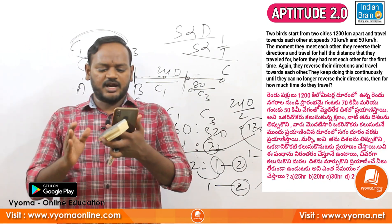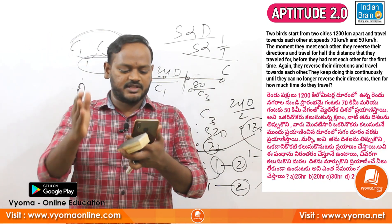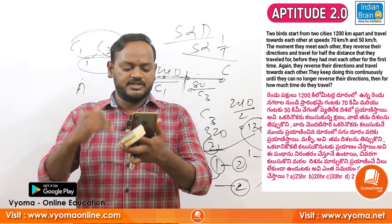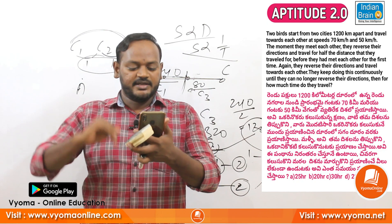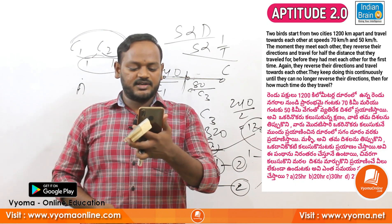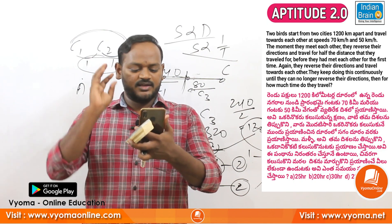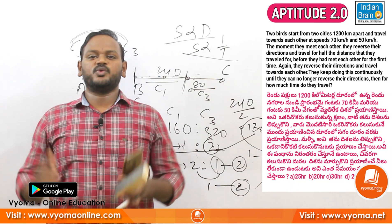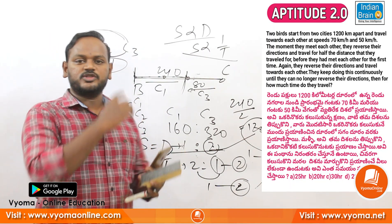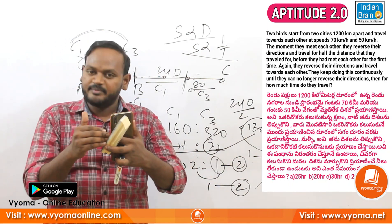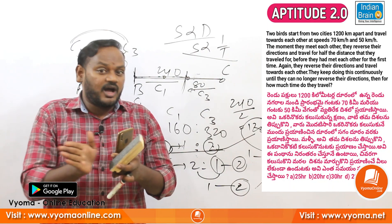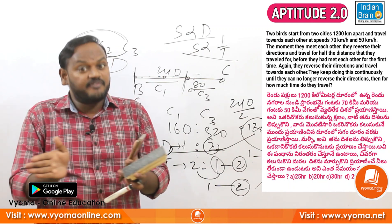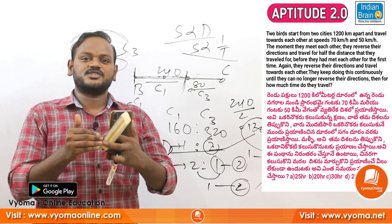Second question: two birds start from two cities 120 km apart and travel towards each other at speeds of 70 km per hour and 50 km per hour. The moment they meet, they reverse their directions and travel half the distance they travelled before. They keep repeating this — reversing and travelling half the previous distance — continuously.